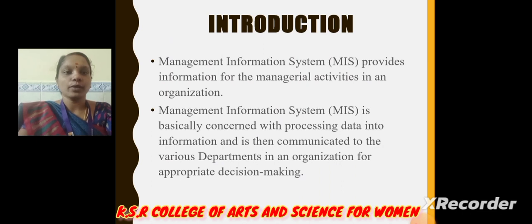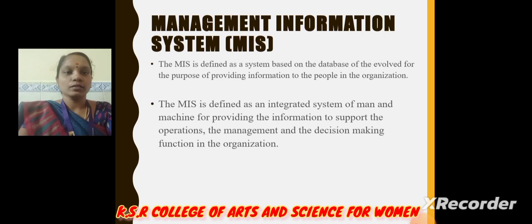Introduction: MIS provides information for managerial activities in an organization. It is basically concerned with processing data into information, and it is communicated to the various departments in an organization for appropriate decision making. MIS is defined as a system based on the database evolved for the purpose of providing information to the people in the organization. It is defined as an integrated system of man and machine for providing information to support the operations, the management, and the decision making function in the organization.